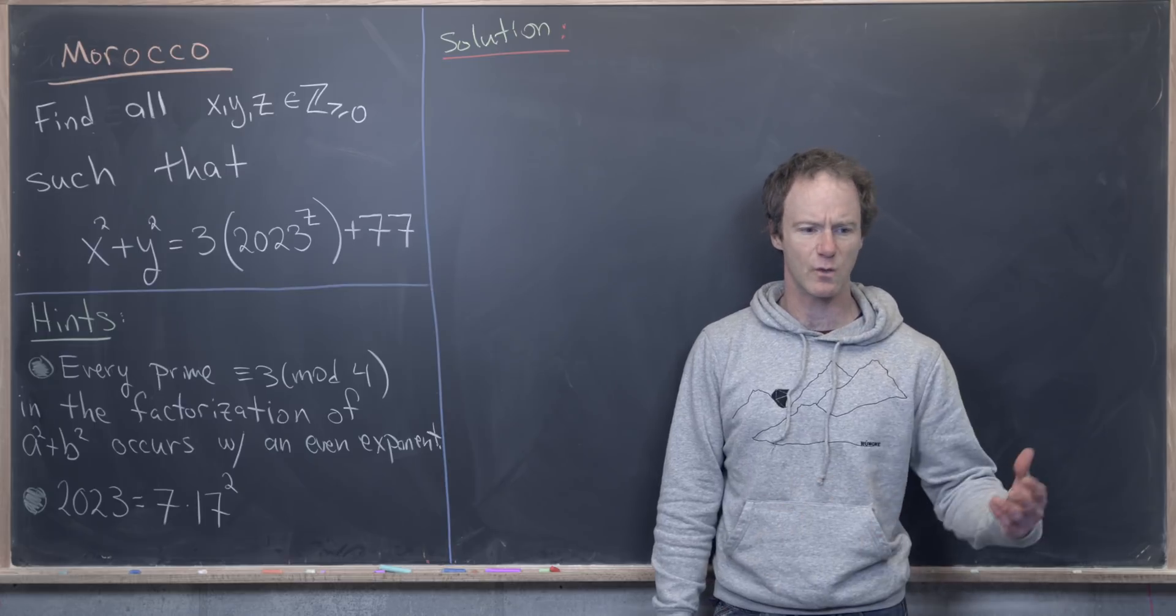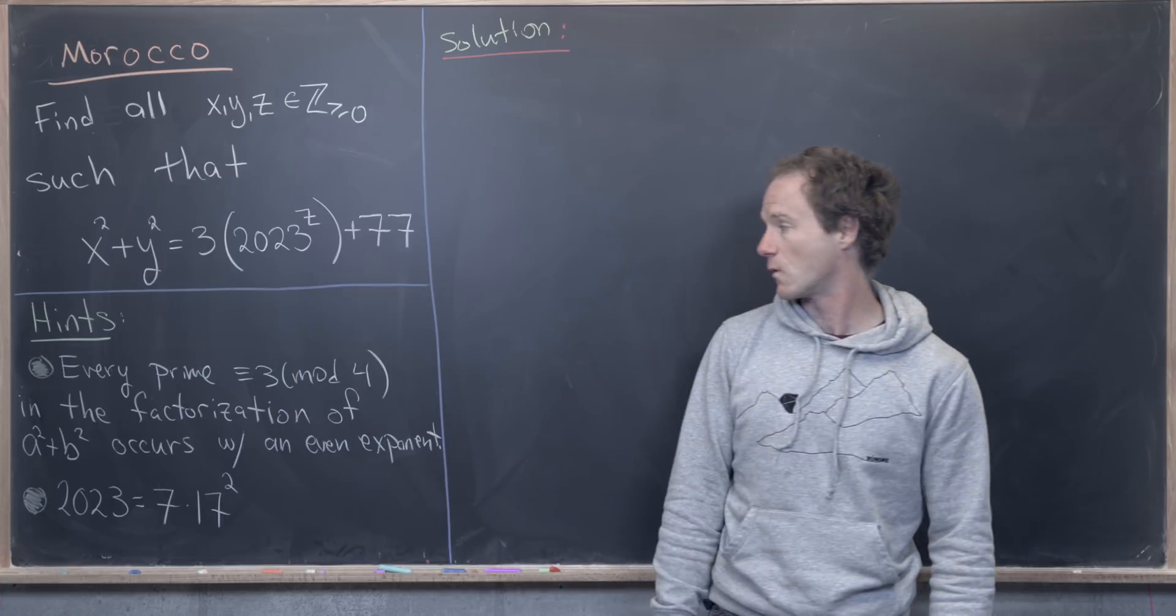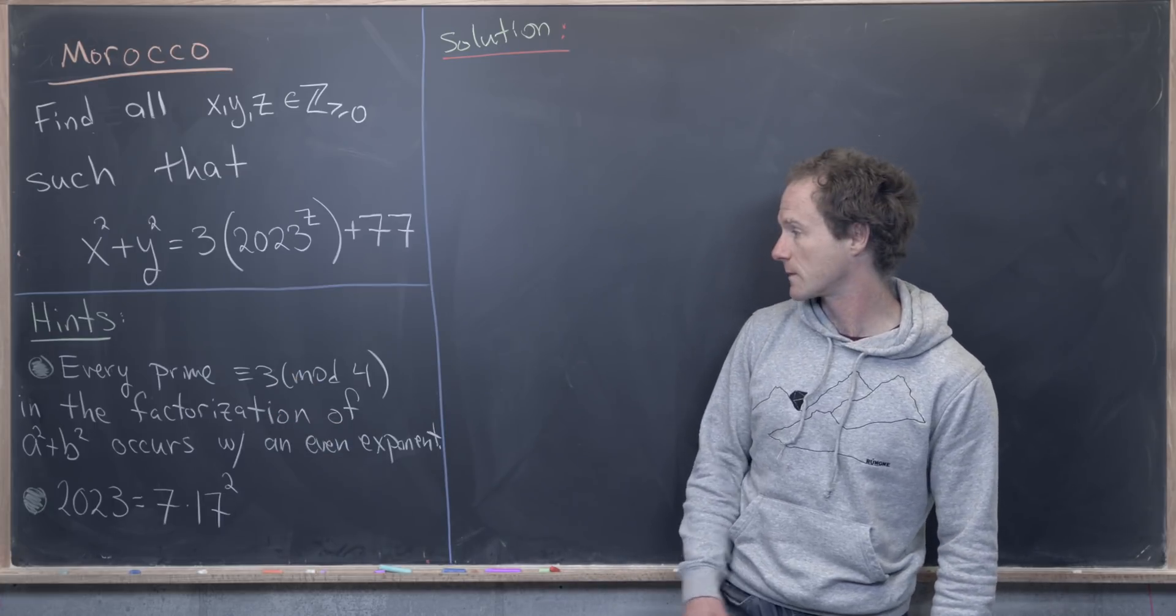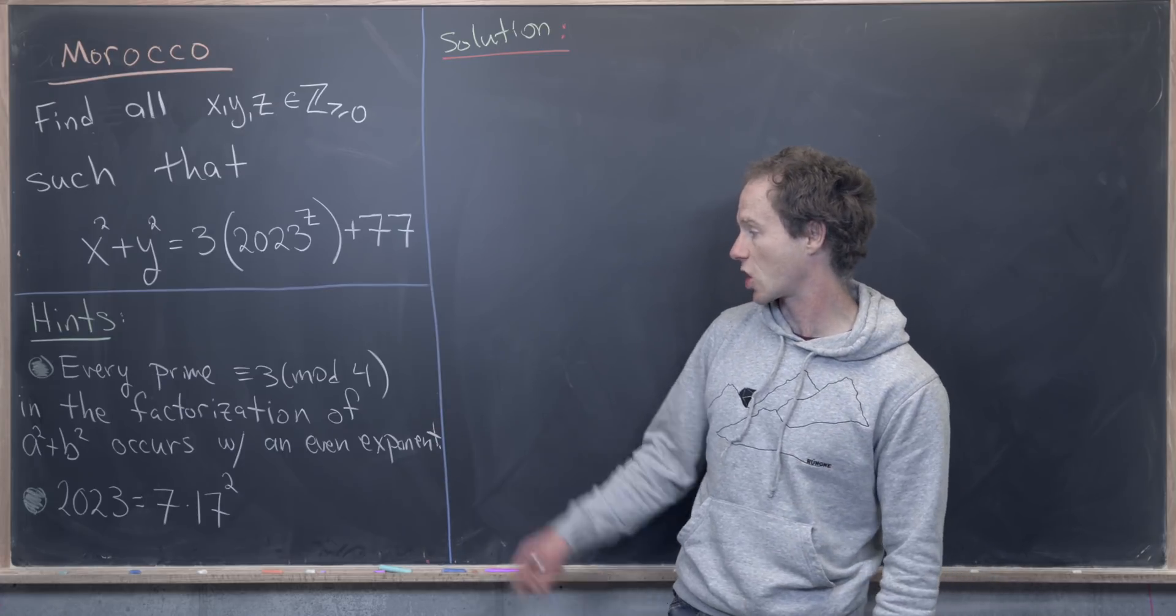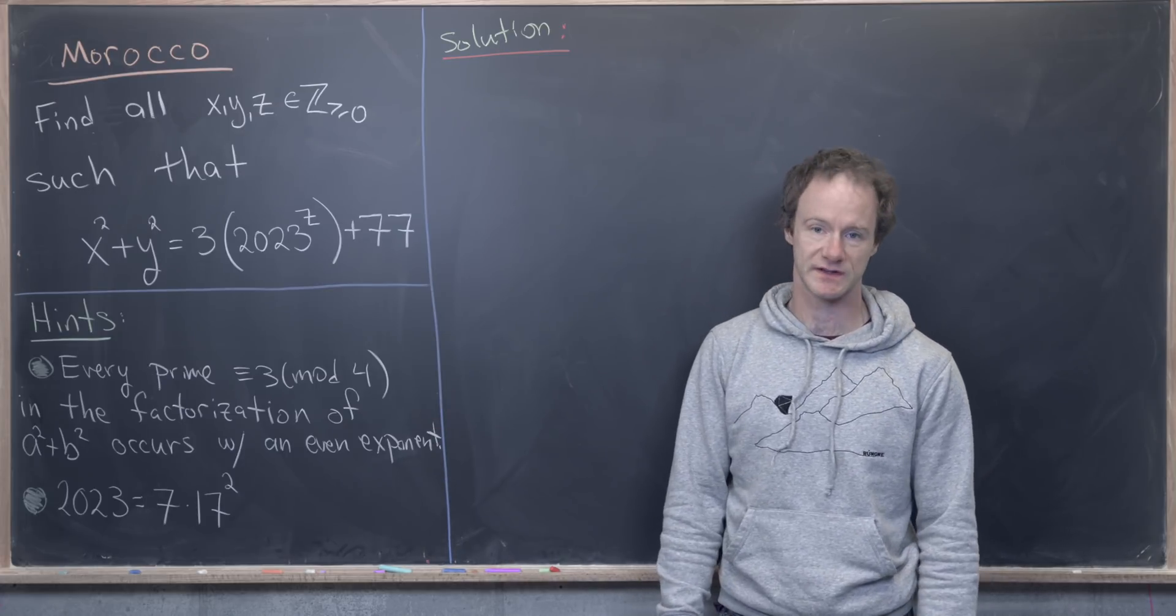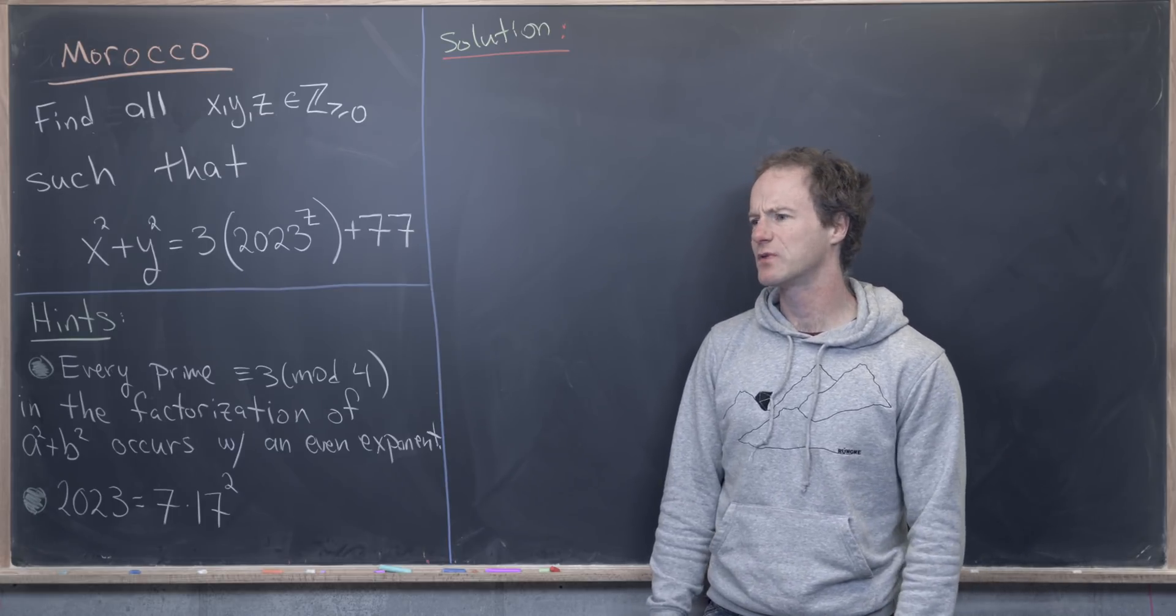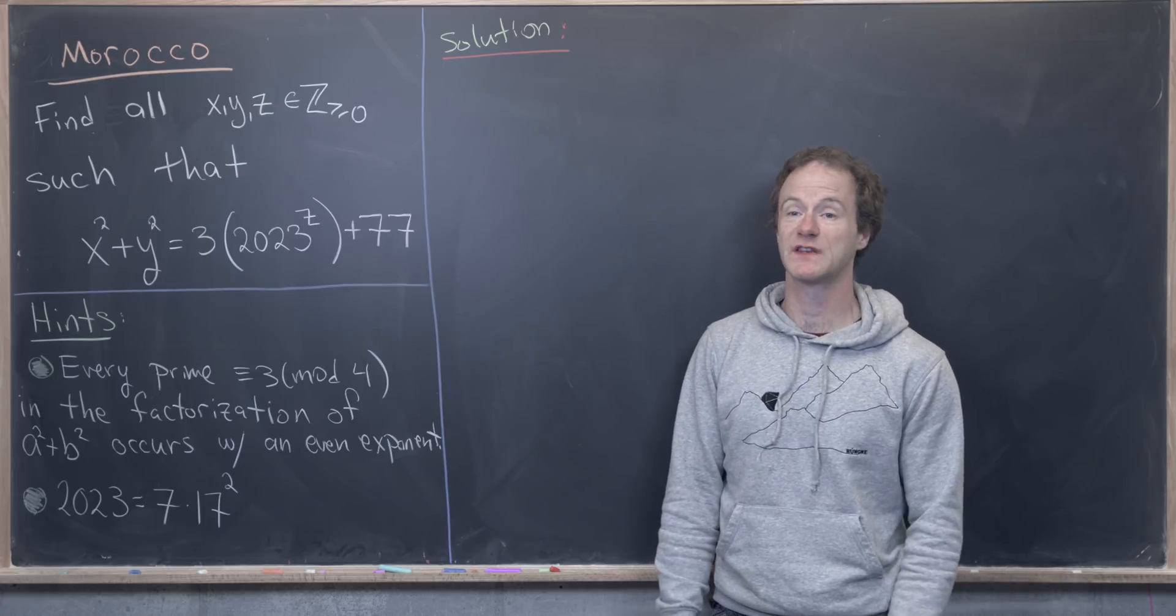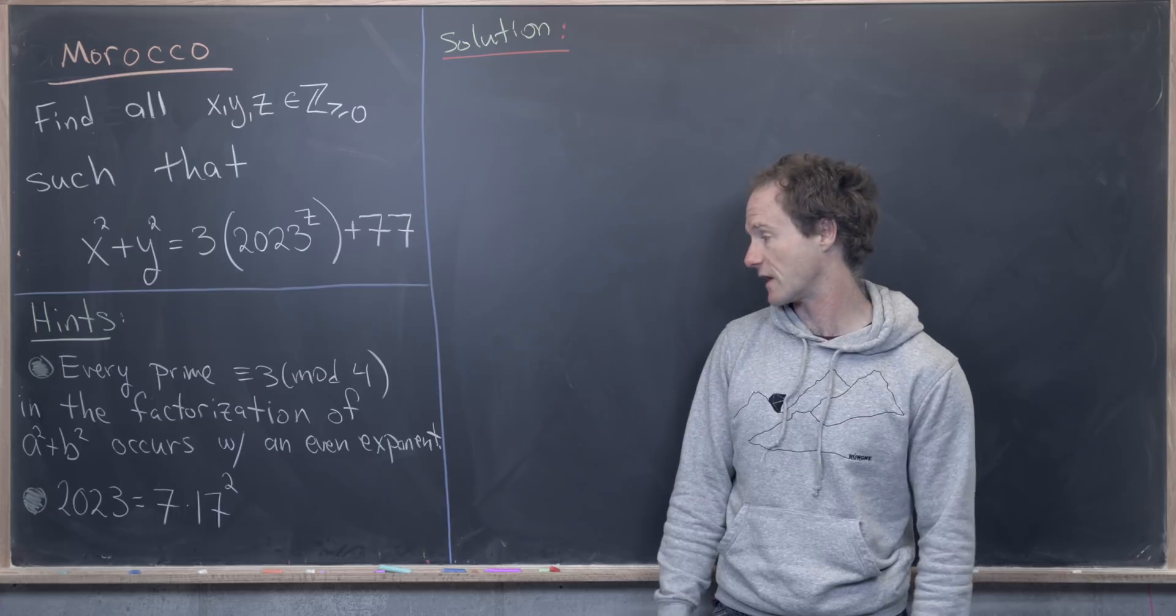And there's a very well-known result in number theory that says every prime of the form 3 mod 4 that is in the factorization of a sum of two squares occurs with an even exponent. So I'll let you guys look up that proof. I have a playlist where I do a bunch of stuff with sums of squares from back when I was teaching a number theory class.